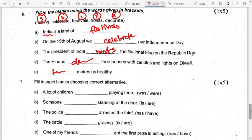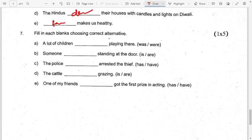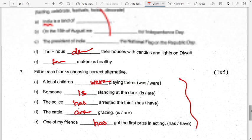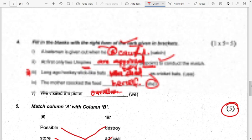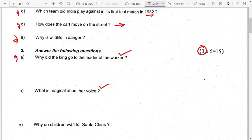Fill in each blank choosing the correct alternative. A lot of children were playing. The police have arrested. The cattle are grazing. If you like the video, please like and subscribe to my channel and turn on the notification button.